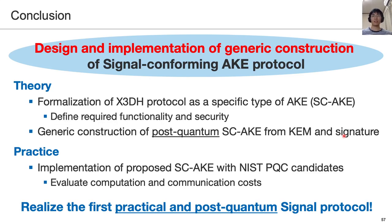In conclusion, we show the design and implementation of a generic construction of signal-conforming AKE protocols. Our contribution is threefold. First, we formalize the X3DH protocol as a specific type of AKE called SC-AKE and provide the formal security model. Second, we propose the generic construction of post-quantum SC-AKE from KEM and signature schemes. Finally, we implement our SC-AKE protocol with NIST PQC candidates and evaluate the computation and communication cost. As a result, we realize the first practical and post-quantum SC-AKE protocol. Thank you for your kind attention.